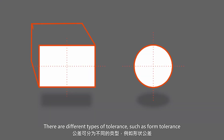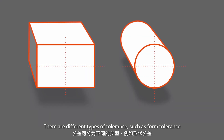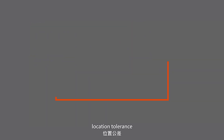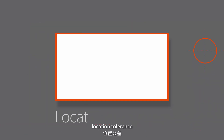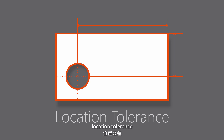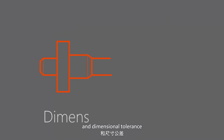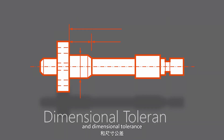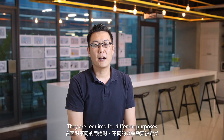Tolerance means how much variation you can accept when you manufacture each part of the product. There are different types of tolerance, such as form tolerance, location tolerance, and dimensional tolerance. They are required for different purposes.